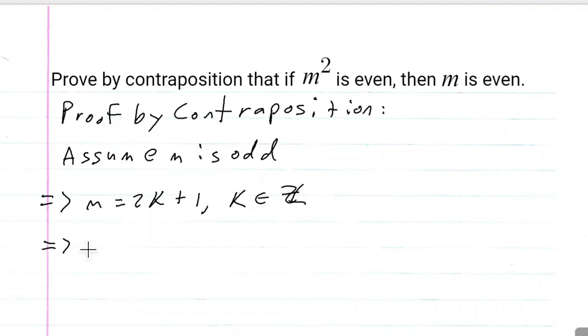Now we're going to investigate m squared. That's equal to 2k plus 1 squared, which is of course equal to 2k plus 1 times 2k plus 1.